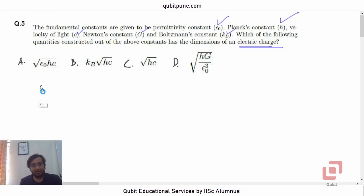Now epsilon not appears as a part of the constant of proportionality in Coulomb's law. So can you recall the SI unit of permittivity? It is Coulomb squared upon Newton meter squared, because F equals 1 upon 4 pi epsilon not into Q1 Q2 upon R squared.